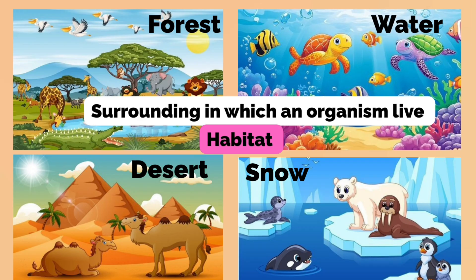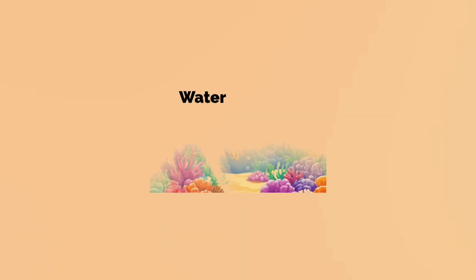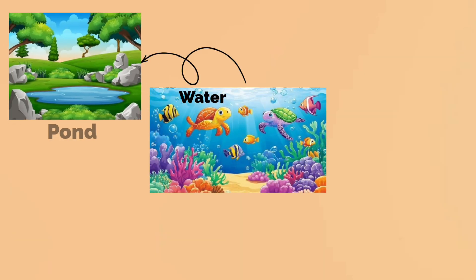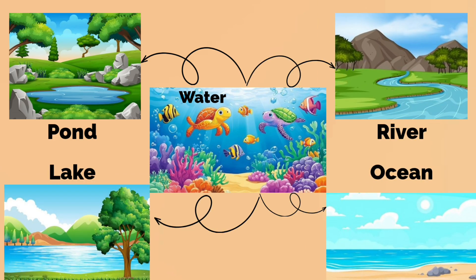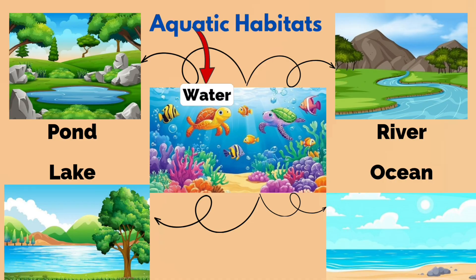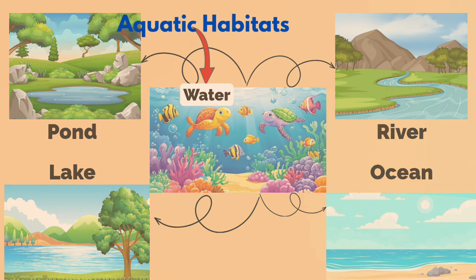Many organisms live in water, more specifically in ponds, lakes, rivers, oceans and other water bodies. We say that these organisms live in aquatic habitats. Do not get confused with the term 'aqua' — it means water. Let's learn about some of the aquatic habitats on Earth.